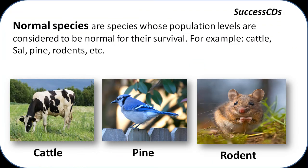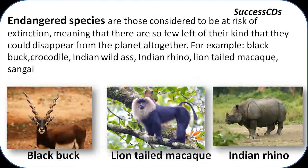Normal species are those whose population levels are considered normal and can be seen easily. For example, cattle, sal, pine, rodents, etc. Endangered species are those which are at the risk of extinction — they can go extinct from a particular area, a state, a country, or even the planet. Examples include black buck and Indian rhino.